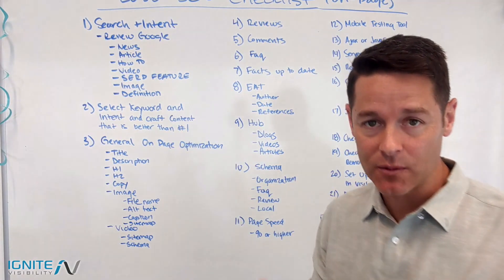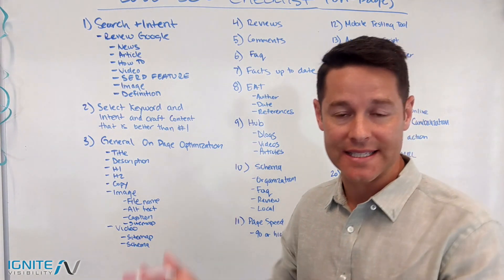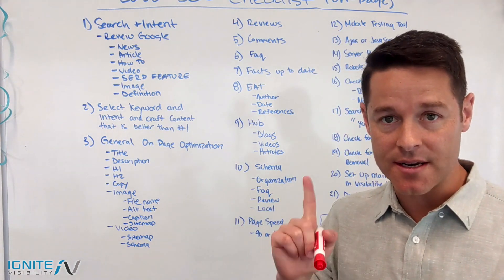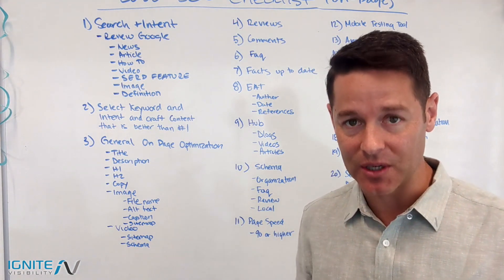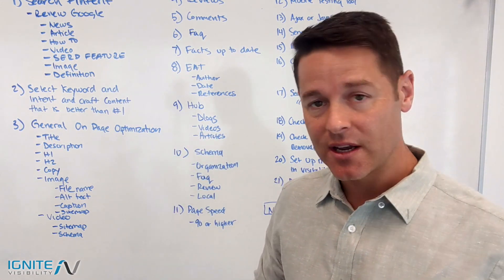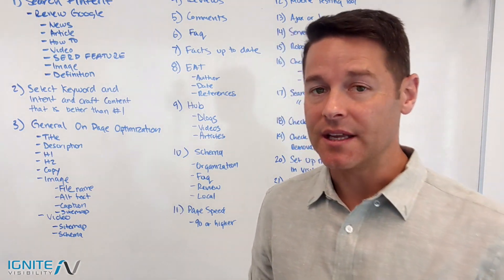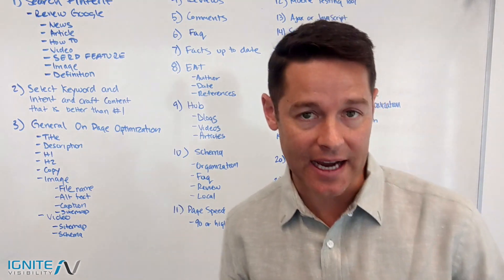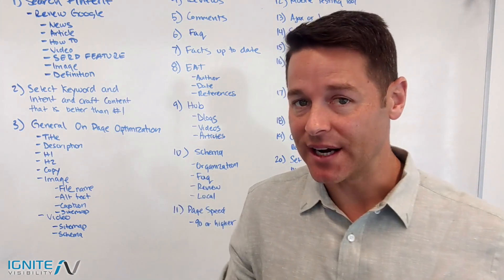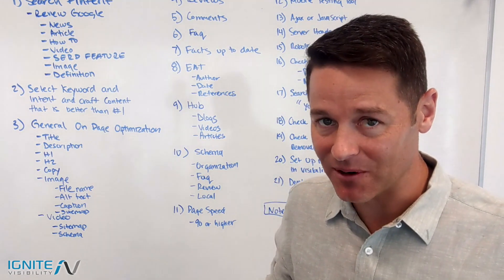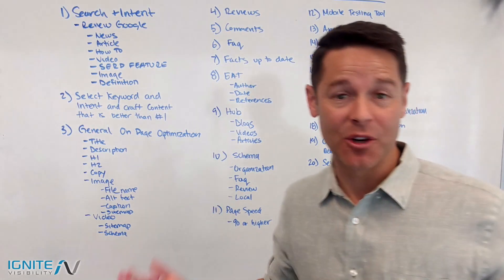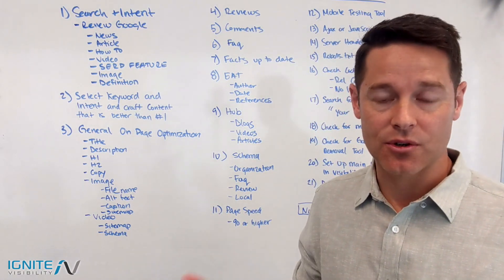You need to dictate your entire on-page SEO checklist around whichever type of content you are creating. Figure out the keyword, match it to the intent of the user — that's going to go a long way. That's item number one: make sure you do a thorough review of Google. Item number two: make sure that the keyword you select, matched to the intent, produces content that is better than the number one ranking item in Google.